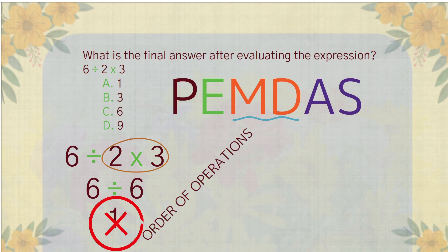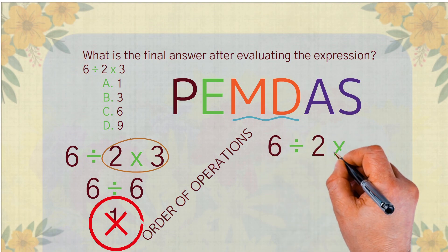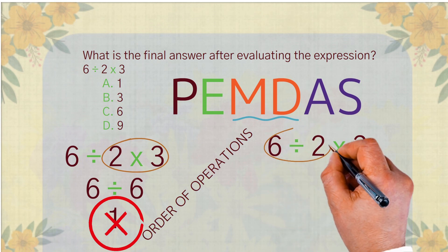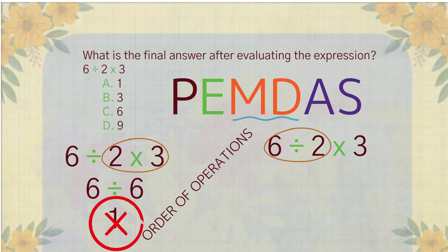Now let's solve it the correct way, step by step. The expression is 6 divided by 2 times 3. Start with division: 6 divided by 2 gives us 3. Now the expression becomes 3 times 3. Next, multiply: 3 times 3 equals 9.